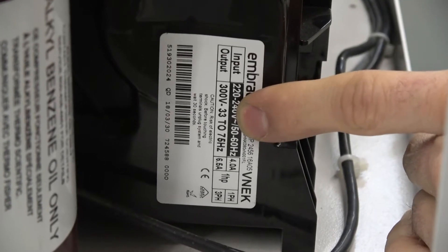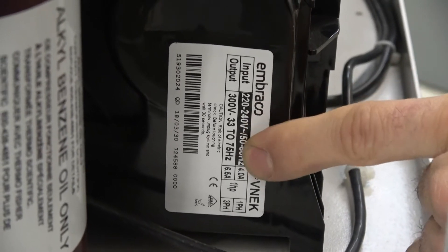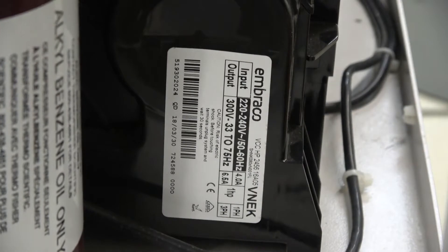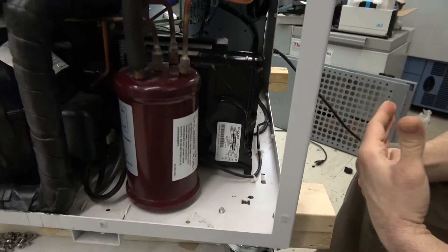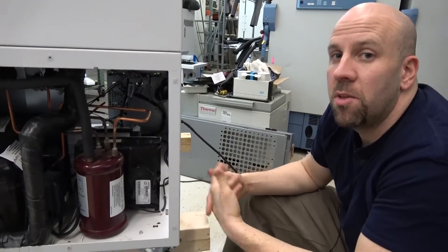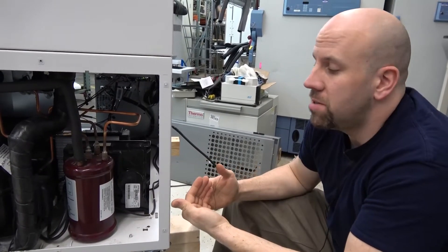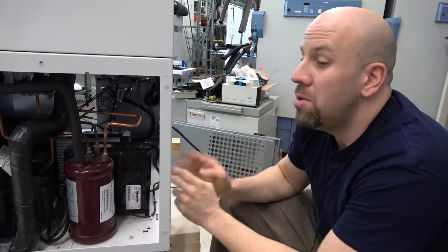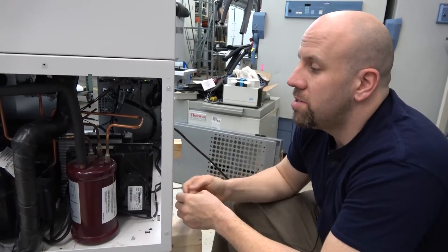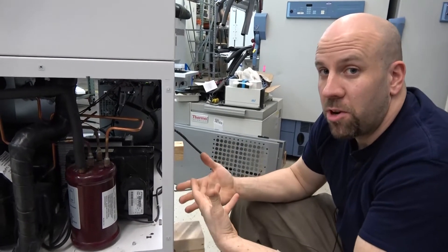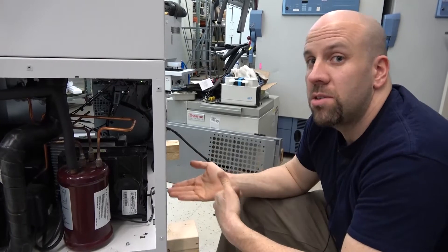And by varying the frequency of the power going to the compressor, they can actually speed up or slow down the compressor. So it comes in one phase and it goes out three phase to the compressor. And based on the frequency, they can either speed up the compressor or slow it down.